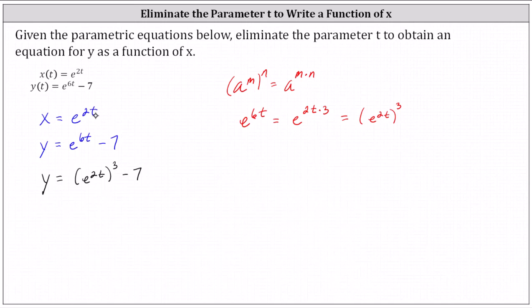we can now perform a substitution and replace e to the power of 2t with x, which gives us y equals x cubed minus 7. And we now have y as a function of x. I hope you found this helpful.